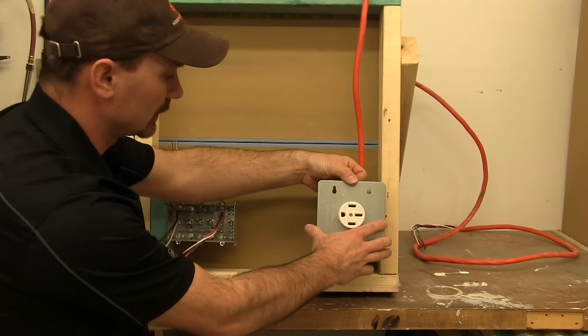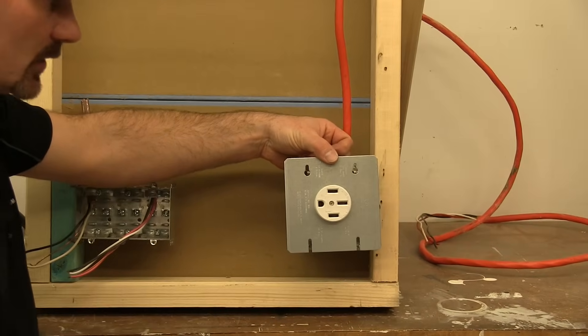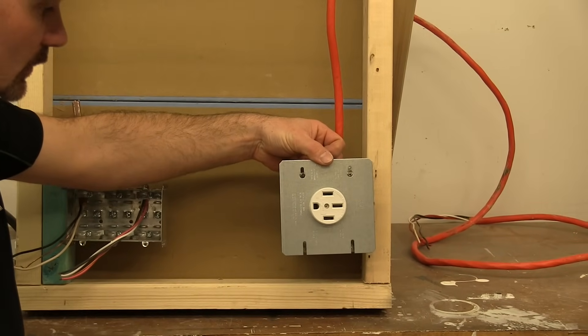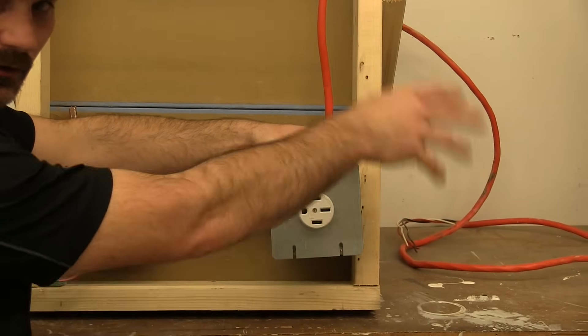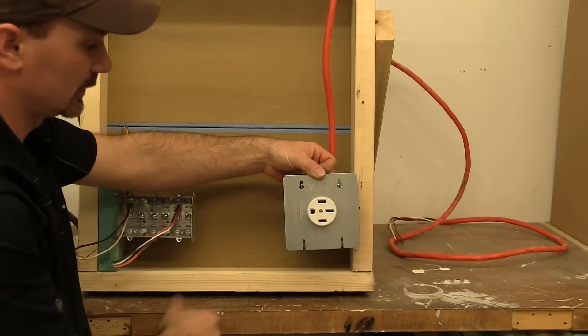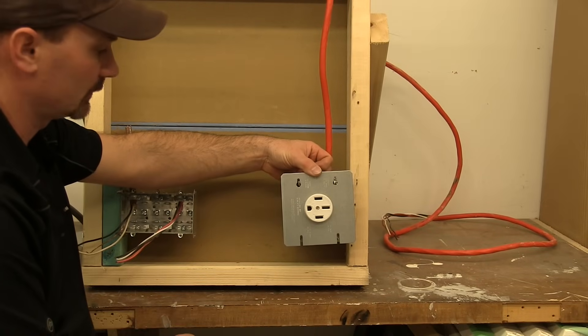The other thing to consider is kind of where the center of your opening for your stove is and you want to usually have this box either mounted to the right off center or the left off center so the cord has room to flex around.